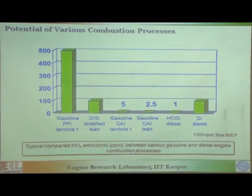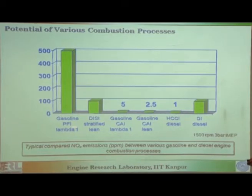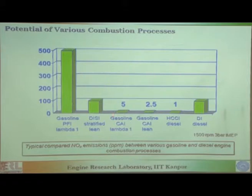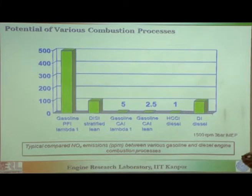Now let us see — various combustion processes are compared here. This is the NOx emission on the y-axis, and different engine technologies are given on the x-axis. Typically, NOx emissions in ppm are compared between various gasoline and diesel engine combustion processes, all running at 1500 rpm and 3 bar indicated mean effective pressure. A gasoline port fuel injection MPFI engine gives 500 ppm NOx, and gasoline controlled auto ignition — basically if you are using gasoline fuel you say it is CAI; HCCI is called CAI — controlled auto ignition. When you are using diesel, you call it HCCI. The technology is the same, but called by different names.